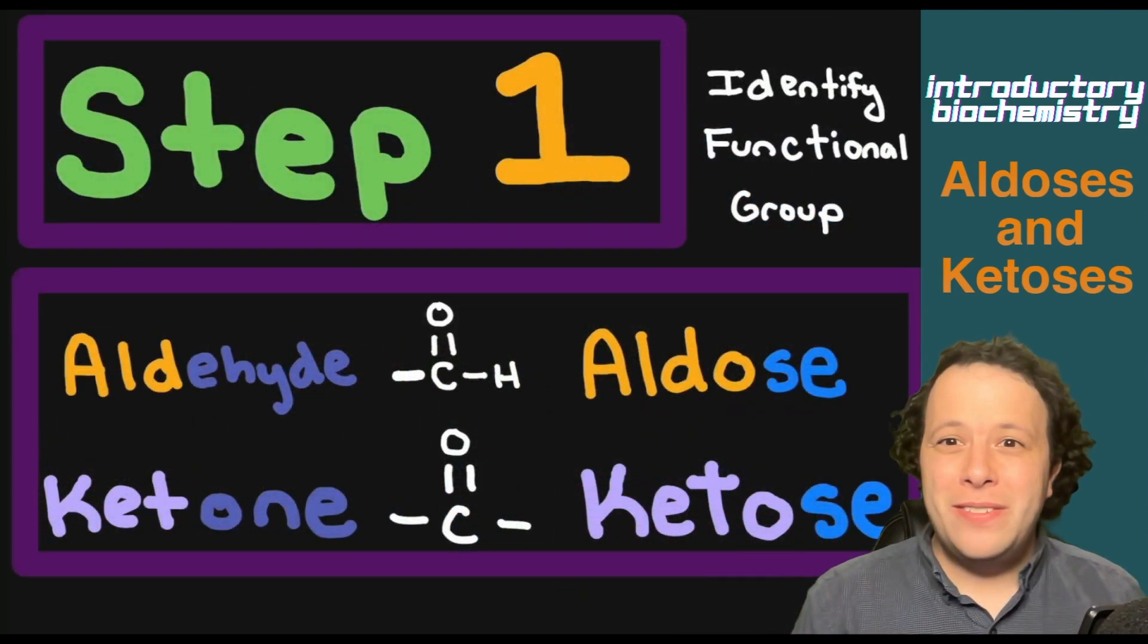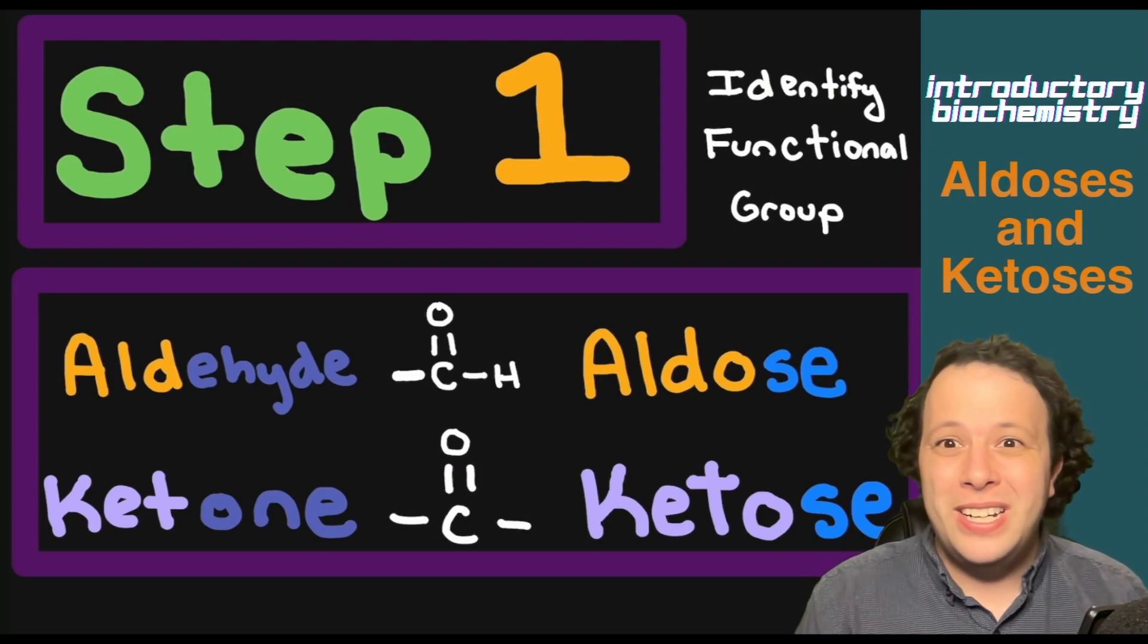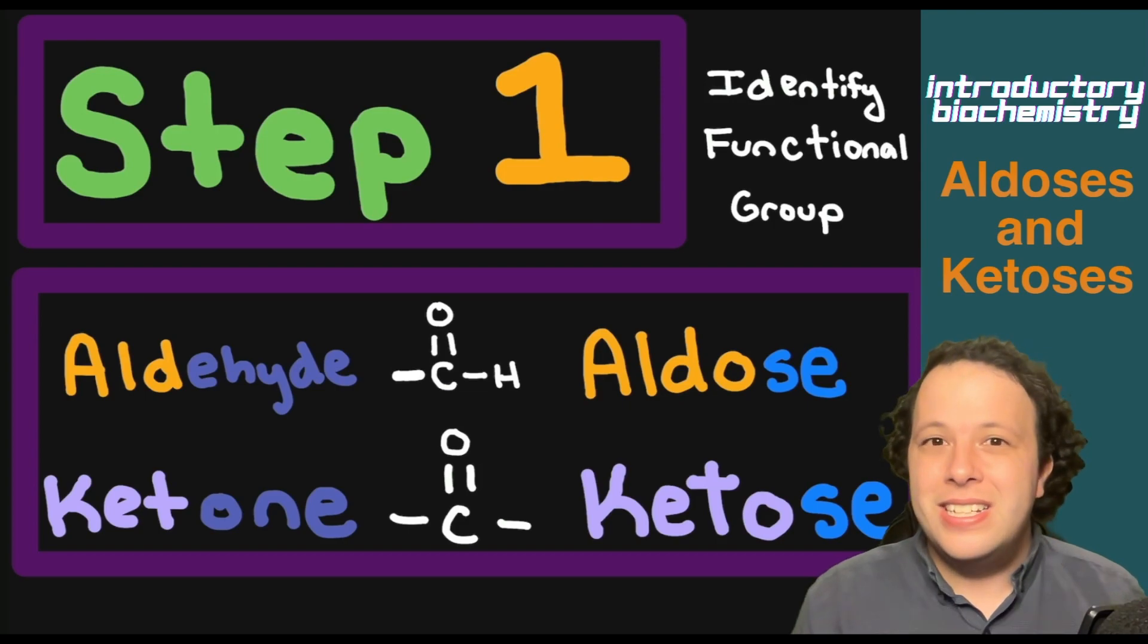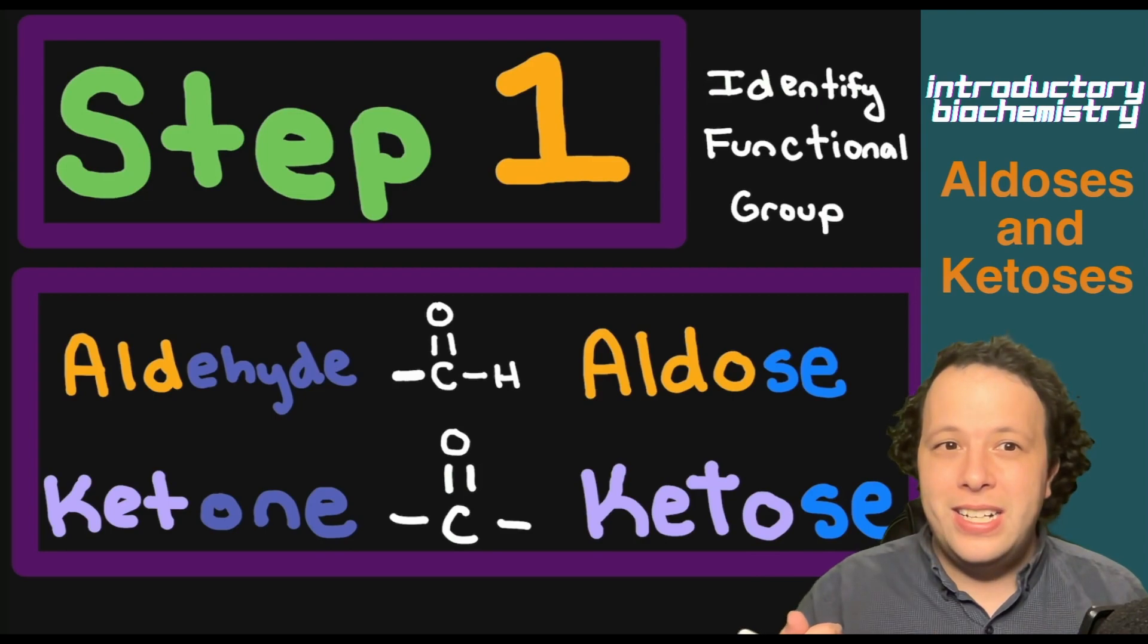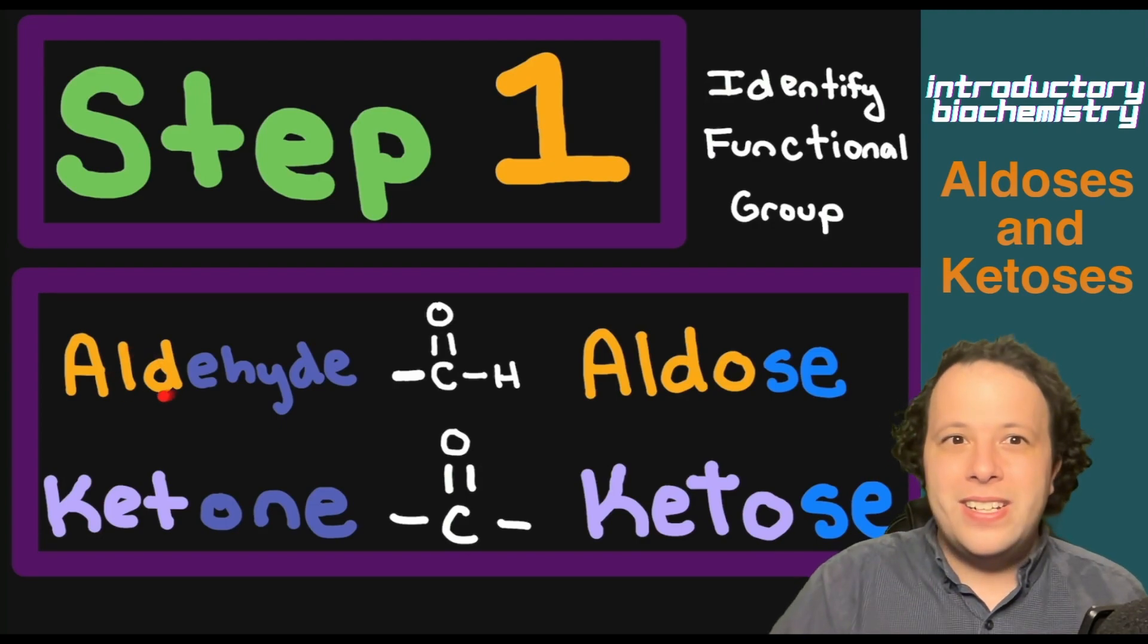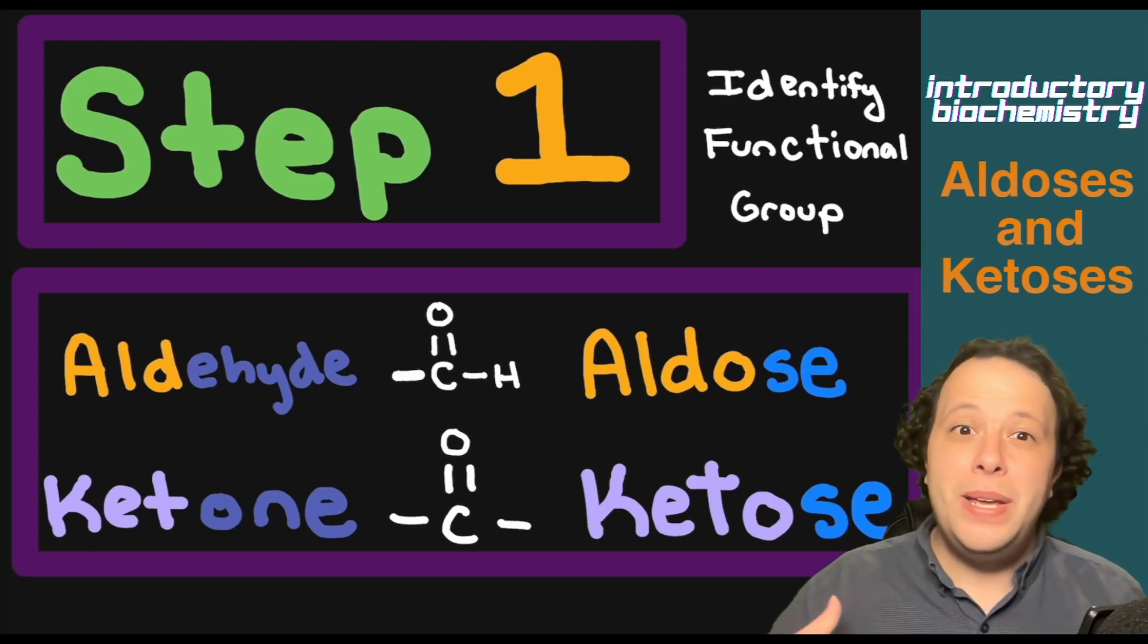When we are given a carbohydrate or a simple monosaccharide, the first step is that you have to identify the functional group, which is what you will receive training on how to do from your introductory organic class. So what you're looking for is two major functional groups: aldehydes and ketones. When we have our first one, with our aldehyde, what's going to happen is we're going to take that ALD portion and put the ose ending on it to make it an aldose.